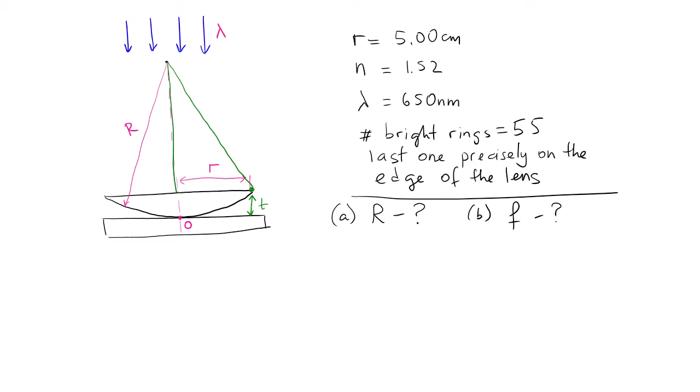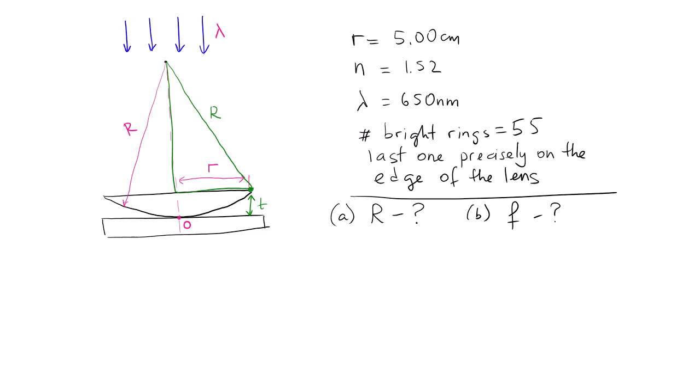This green one. You will see we can use Pythagorean theorem to solve for R. So if this is the radius of the curvature, the height of the triangle would be R minus T because this part was a T. And then Pythagorean theorem will give us R squared equals R minus T squared plus little r squared. So our job is to find this T.